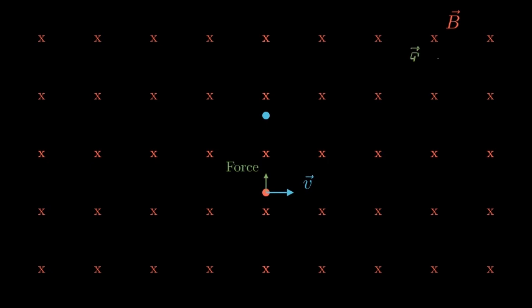This force is F equals Q times V cross B. And this cross product results in the force being perpendicular to both the velocity and the magnetic field. The force induces an acceleration perpendicular to the velocity at all times. You may know this as uniform circular motion, and you can see the electron moving in a circle.